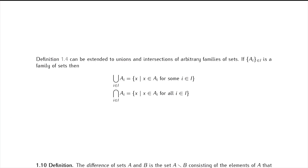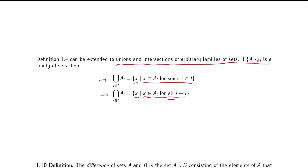The definitions of union and intersection can be generalized to arbitrary families of sets. Given a family of sets A_i — finite or infinite — the union of this family is the set of all elements which belong to any of these sets. The intersection of a family of sets is the set consisting of all elements which belong to all sets in the family — the common part of all those sets, elements belonging to every individual set at the same time.